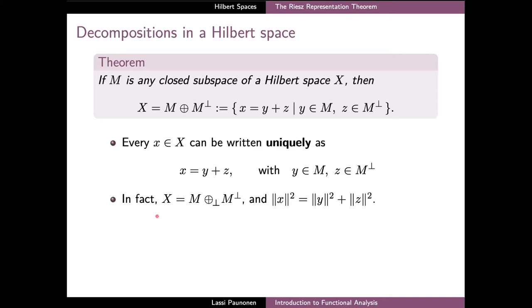Even more is true: this sum is in fact an orthogonal sum, meaning that the elements of the two subspaces are always orthogonal with respect to each other. This is sometimes denoted by adding a small perpendicular symbol to the sum, but in both cases the actual set of elements defined by the sum is the same. The orthogonality in the sum also implies via the Pythagorean theorem that the norm of the element x is always the square root of the sum of the squares of the norms of y and zeta.